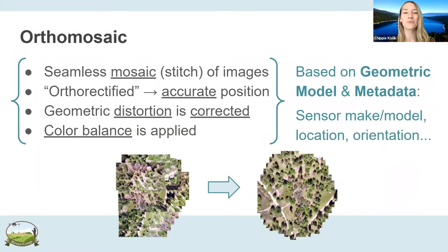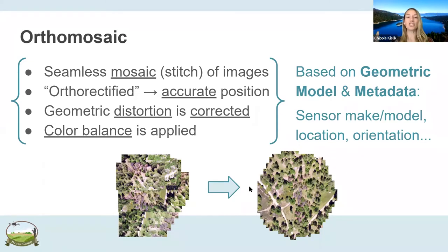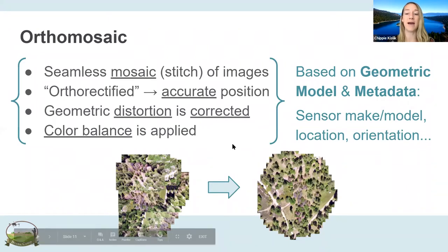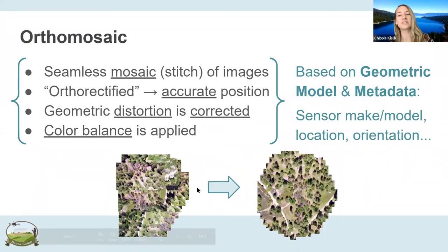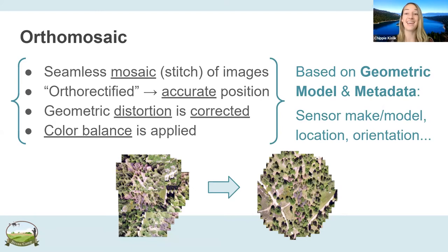As a quick refresher: in this workshop we're going to take 88 drone images and put them into a geometric model that's able to adjust and align all the photos, stitching them into one single orthomosaic — one single photo with accurate positions within the map. The geometric distortion is corrected and color balance is applied, so you don't have really bright photos on one side and dark on the other. The model uses metadata like the drone, the camera, GPS location, and photo orientation to do this.